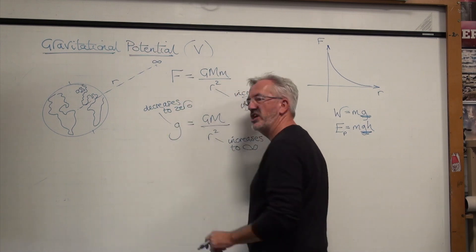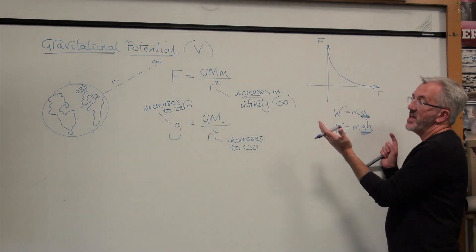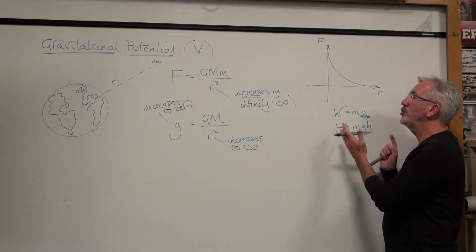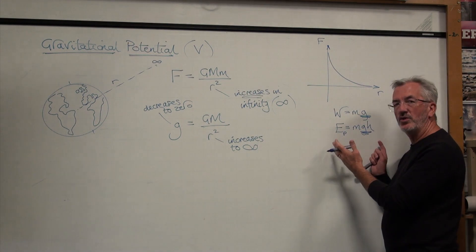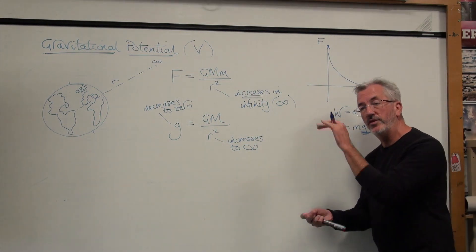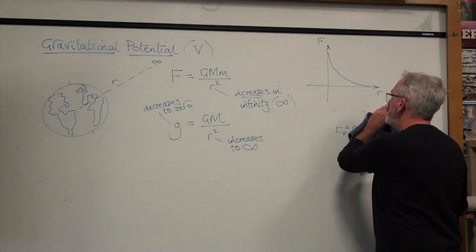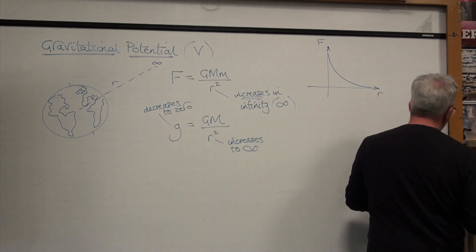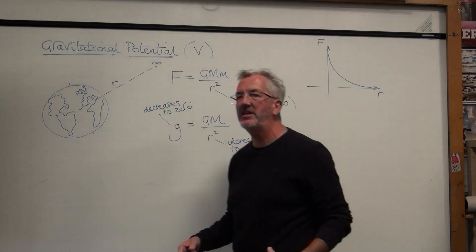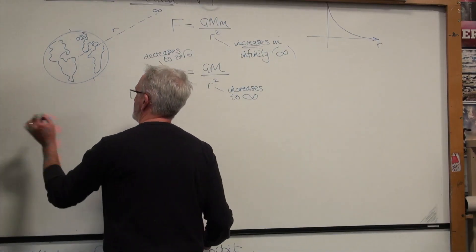So g is always changing. The further away you get from the Earth or from the Sun or from an astronomical body, we can no longer use these equations. These are only approximations for when you're at the surface of the Earth and you're only moving through a very small change. So how do we define the amount of work that we have to do to move an object in a gravitational field? Well, there's a definition for it, and this is it.